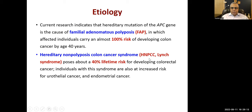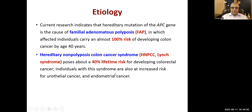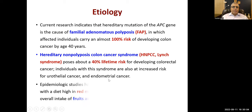Hereditary non-polyposis colorectal cancer, also known as Lynch syndrome or HNPCC, poses a 40% lifetime risk of colorectal cancer. For familial adenomatous polyposis - which carries nearly 100% risk by age 40 - prophylactic removal of the entire colon may be done if the patient agrees. HNPCC individuals are also at risk of urothelial cancers of the bladder and endometrial cancer in females.